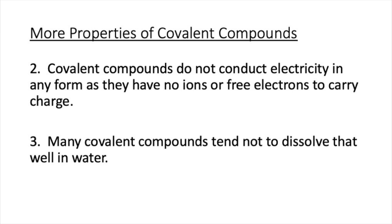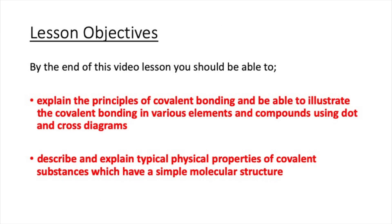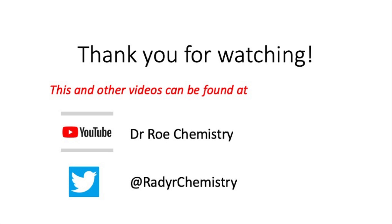Let's recap the lesson objectives. You should be able to explain the principles of covalent bonding and illustrate covalent bonding in various elements and compounds using dot and cross diagrams. You should also be able to describe and explain typical physical properties of covalent substances which have a simple molecular structure. That concludes our video — please check out our YouTube channel, Dr. Rho Chemistry, and our Twitter site at Radachemistry, which contains lots of chemistry information and links.